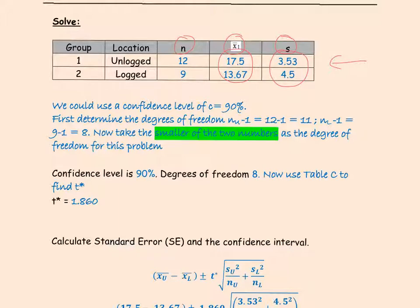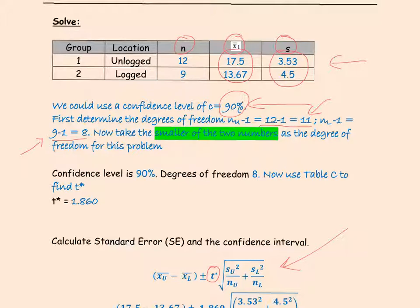To find the confidence interval we need to set the confidence level — let's say 90%. To find t* we need to know the degrees of freedom for each sample. For the first sample of unlogged plots, the degrees of freedom is 12 minus 1, which equals 11. For the second sample of logged plots, the degrees of freedom is 9 minus 1, which equals 8.